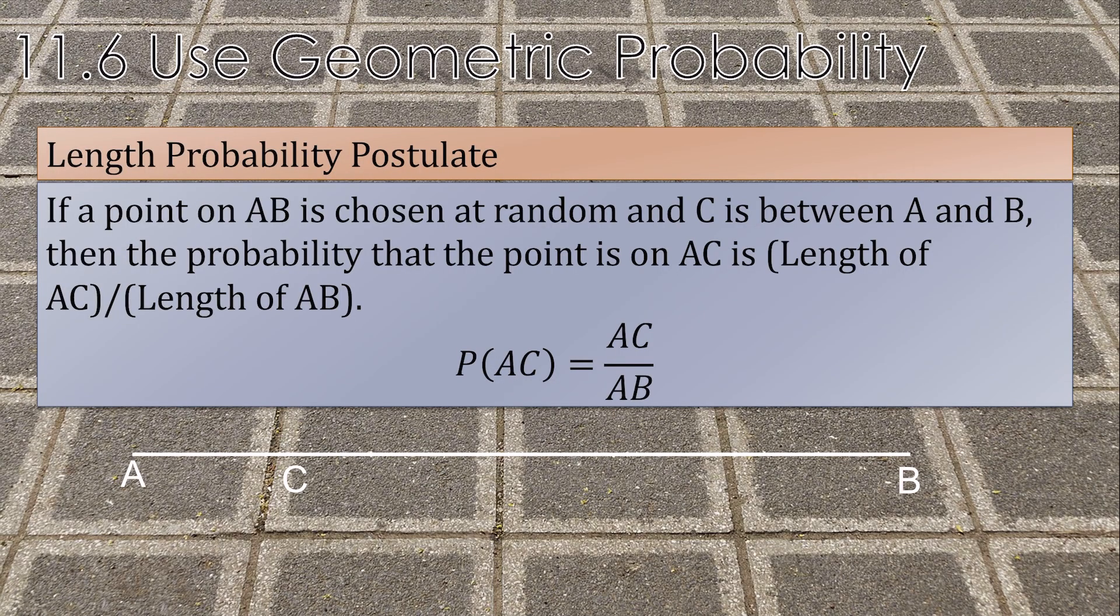That brings us to our length probability postulate. If a point on AB is chosen at random and C is between A and B, then the probability that the point is on AC is the length of AC divided by the length of AB.